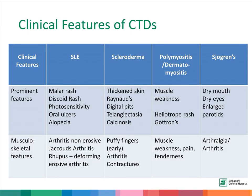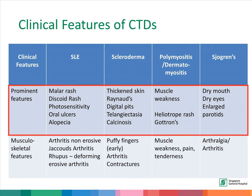The following table compares the clinical features of these four CTDs. The prominent features seen in SLE are the malar or facial rash. In scleroderma, there is thickened skin with Raynaud's phenomenon. In polymyositis, there is weakness of the muscles. And finally, in Sjogren's, there is dryness of the eyes and mouth.